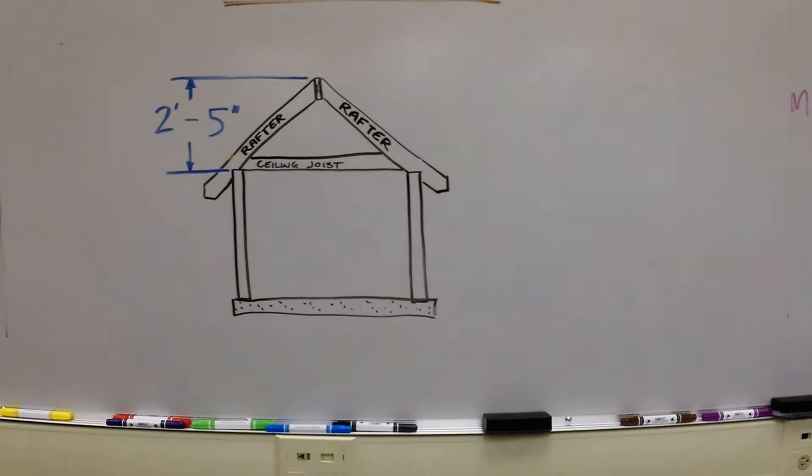Finally, I need to know the vertical distance from the top of the walls to the peak of the roof. You would find this measurement on a set of building plans or calculate an appropriate height for your span and pitch. My total rise would be 2 feet 5 inches.